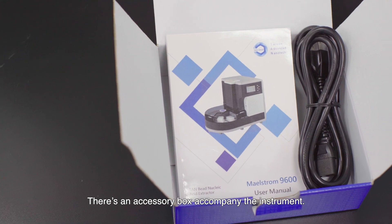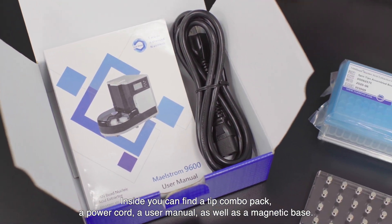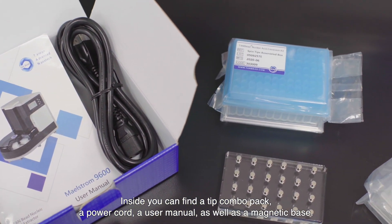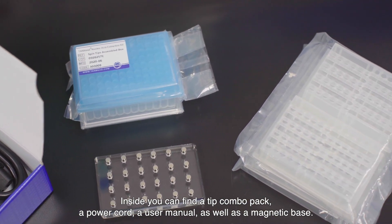There is an accessory box accompanying the instrument. Inside you can find the tip combo pack, a power cord and user manual, as well as a magnetic base.